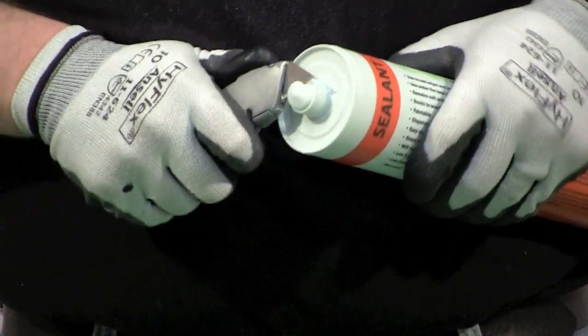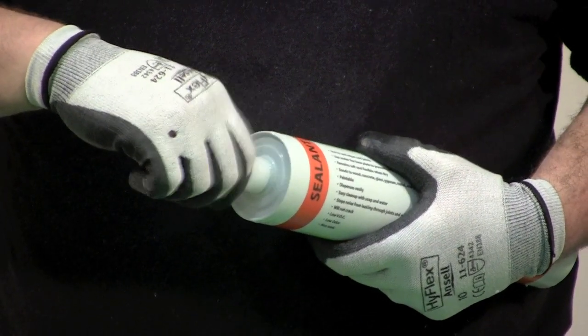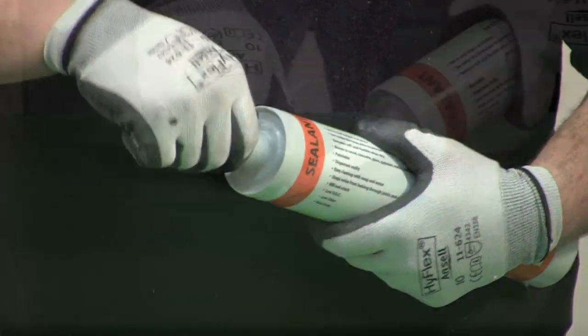Cut a ¼-inch hole in the tip of the tube with a utility knife. Screw nozzle tightly over the tip of the tube and cut a ¼-inch hole in the tip of the nozzle.